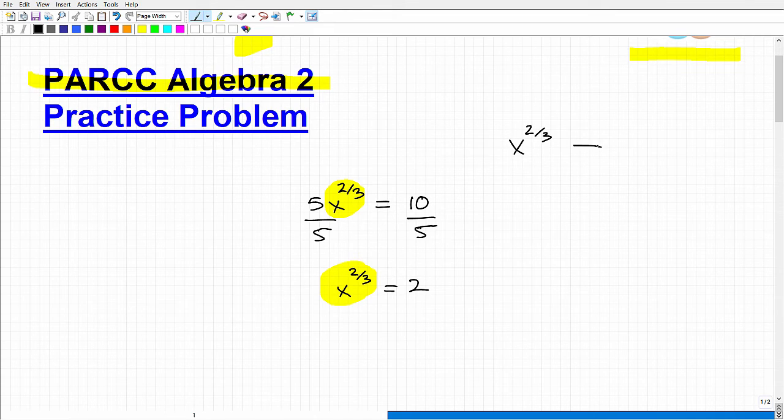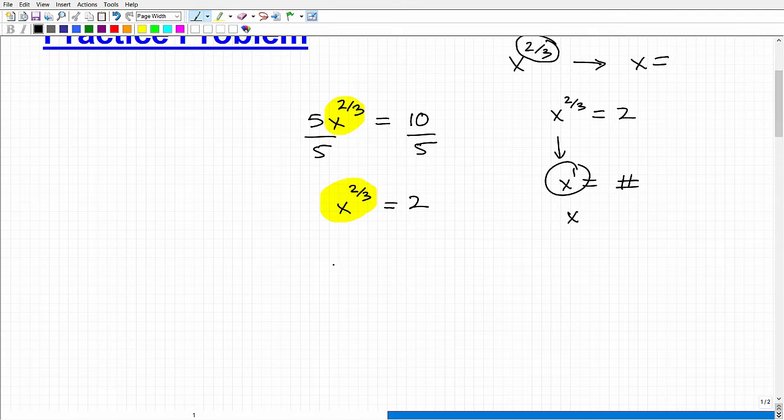I have x to the 2/3. If I'm trying to solve this, I'd like to just see this as just x equals, right? I have x to the 2/3 equals 2. But I want to write this or do something such that I have just x equals whatever. That's my solution. But when you look at x, this is really x to the first power. Of course, we just write this as x. But it's really x to the first power.